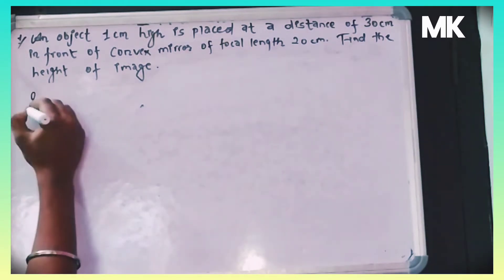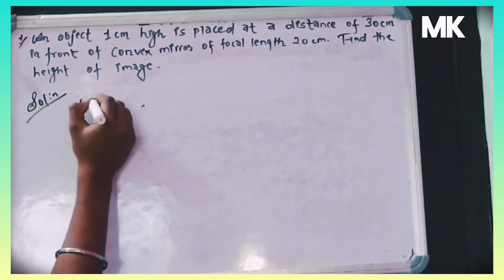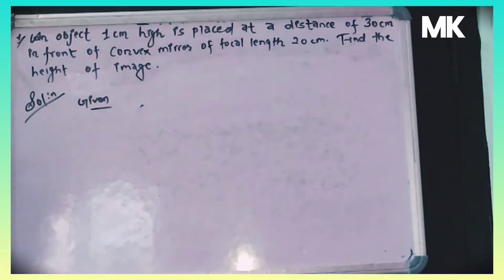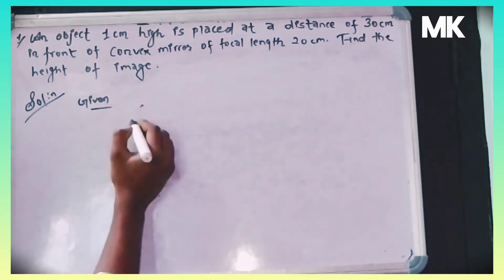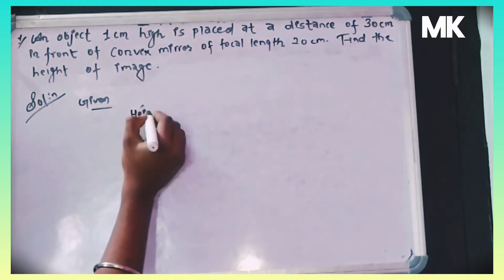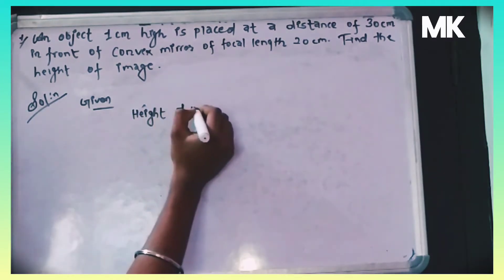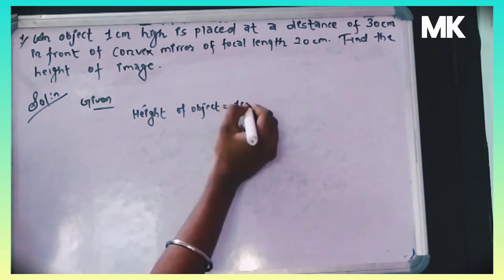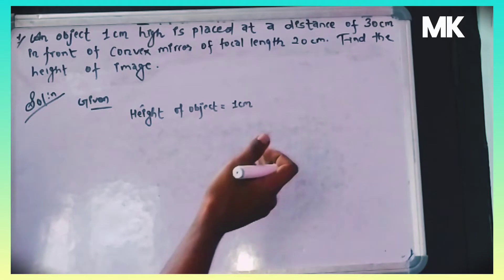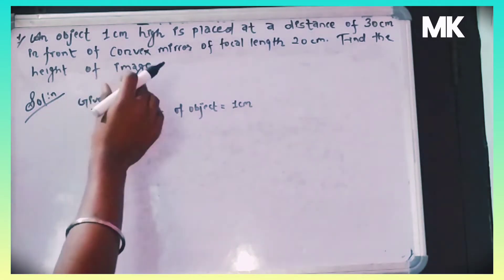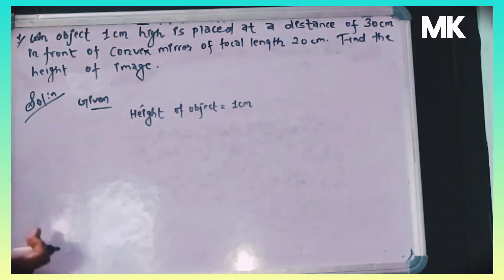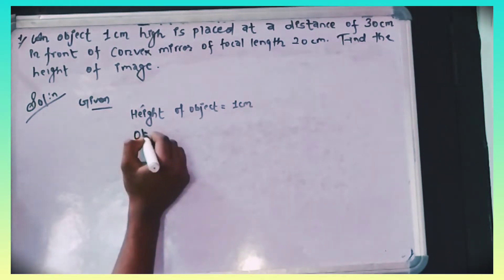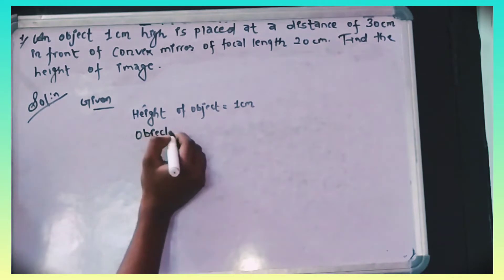The solution: given values are — height of object is 1 cm, and the distance of object is 30 cm in front of a convex mirror. The object distance is given.